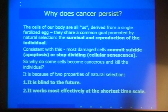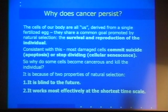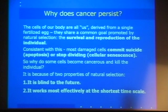Why does cancer persist? Sometimes people say if natural selection was really doing its job, cancer would be gone already. It's even more confusing because cancer is us — the cells of our body are all derived from a single fertilized egg and share the common goal of survival and reproduction of the individual. Consistently, they do sensible things: they keep us going, and if they get damaged, their typical response is to commit suicide or stop dividing. So why do some cells that are essentially identical to all others become cancerous and kill the individual? It's really driven by two properties of natural selection.